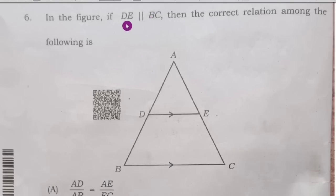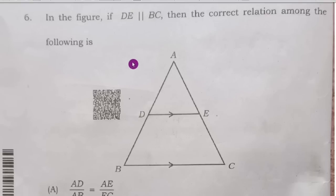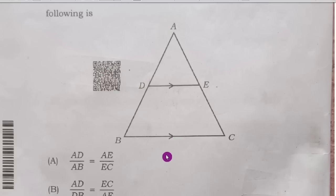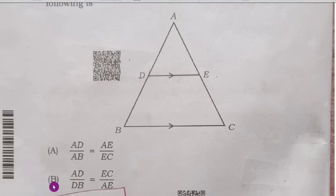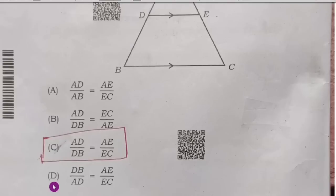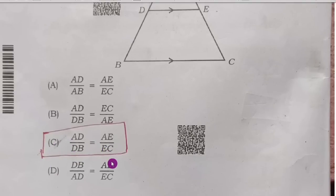Sixth question: in the given figure, if DE is parallel to BC, then the correct relation among the following is. From the figure, the two lines are parallel. Therefore, option C, AD/BD = AE/EC, is the right answer.